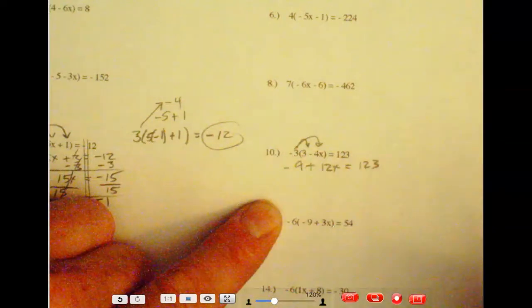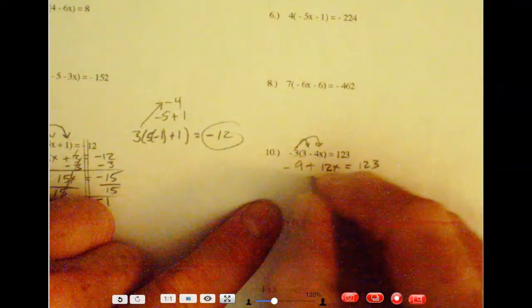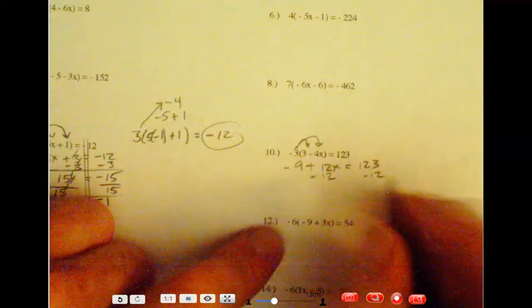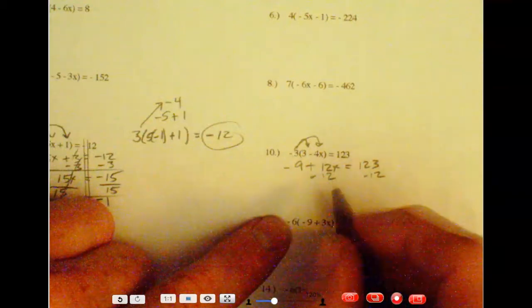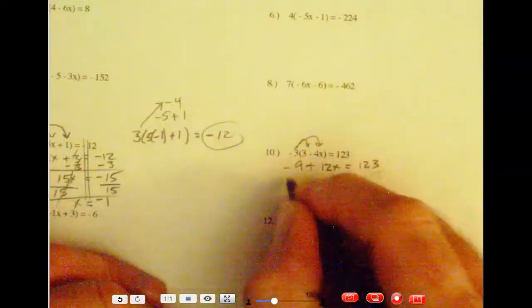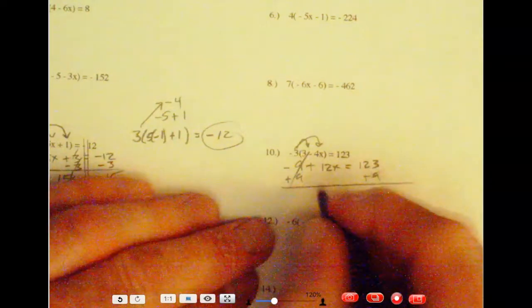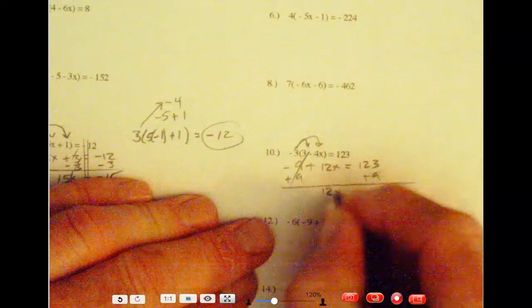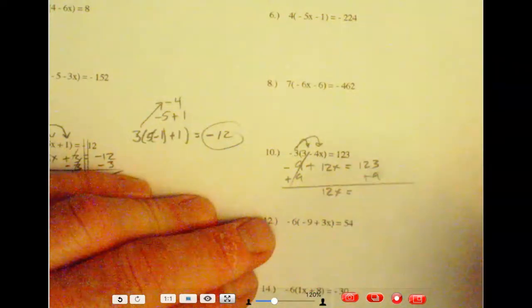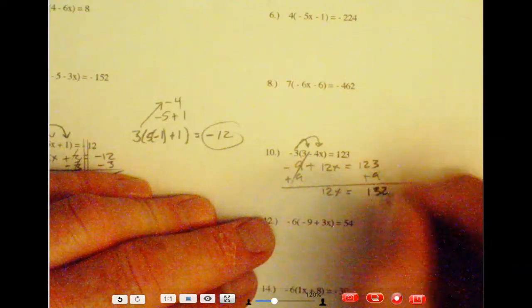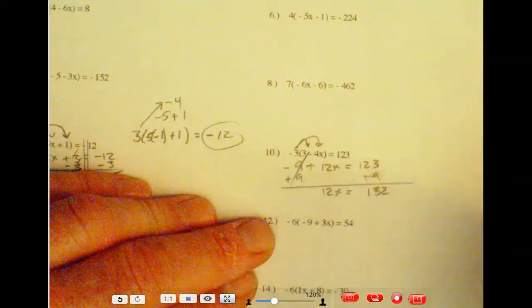All right. So we're going to subtract 12. Oops. Keep that marks a little bit, folks. Subtract. I'm going to add 9. What am I doing, man, too many videos. So I have 12x equals, well, this is going to end up being, looks like 132. Because if there was 123 plus 10, it would be 133. So plus 9 would be 132.